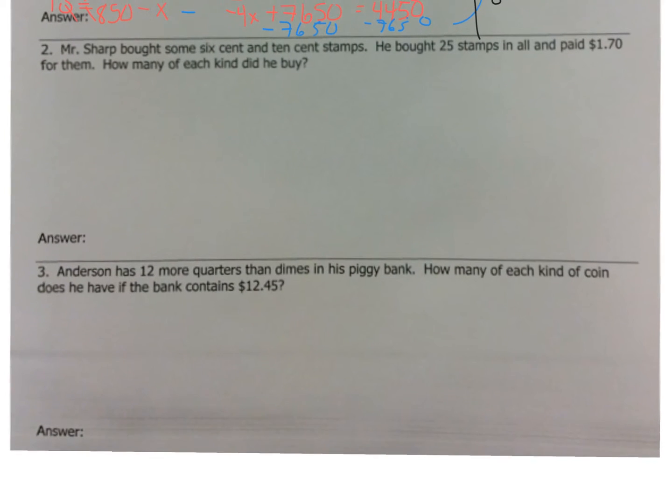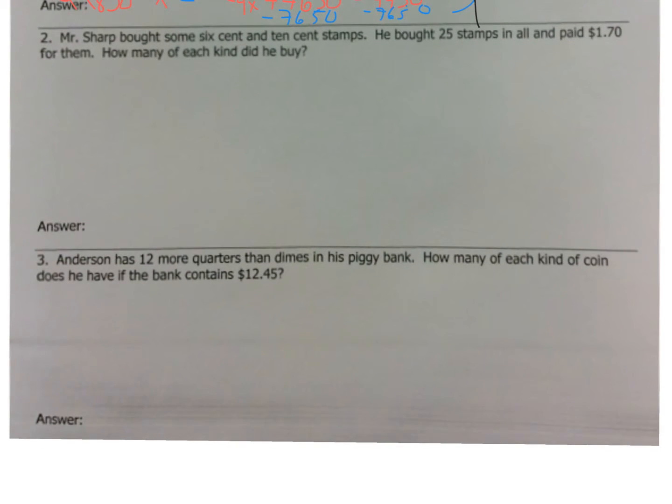So, let's look at number 2. So, it says, first thing we do is we read the thing. Don't do anything else but read it. It says, Mr. Sharp bought some 6 cent and 10 cent stamps. He bought 25 stamps in all and paid $1.70 for them. How many of each kind of stamp did he buy? So, we got a dude buying stamps. So, let's go through this again.